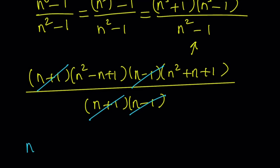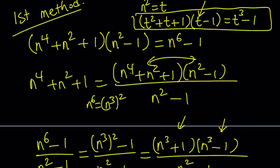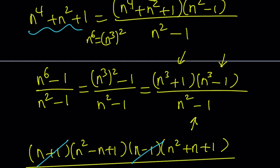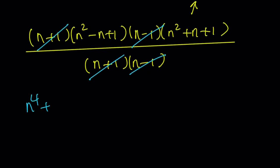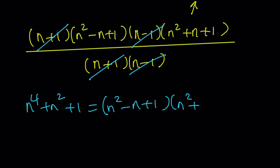So we started off with n to the fourth plus n squared plus 1 and ended up with this factoring: n to the fourth plus n squared plus 1 can be written as n squared minus n plus 1 multiplied by n squared plus n plus 1. And remember, this equals P, which is a prime number. Prime numbers have only two divisors — one and themselves — so P can only be factored as P times 1. You can't do it any other way, otherwise it wouldn't be prime.